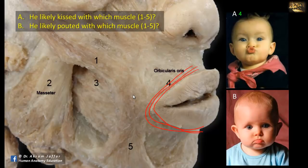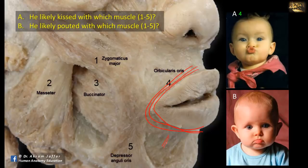The other muscles: 1 is the zygomaticus major, part of the dilator mechanism used in smiling. 3 is buccinator, the muscle of the cheek used in sucking. And 5 is depressor anguli oris, which arises from the anterolateral base of the mandible and, as the name indicates, depresses the angle of the mouth. Depressor anguli oris is the muscle responsible for the pouting in the baby shown in picture B.